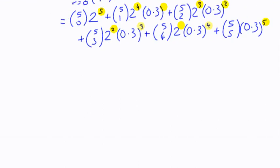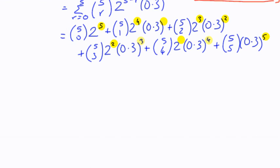First term, 5 choose 0 is 1, 2 to the power 5 is 32. Second term, 5 choose 1 is 5, and 2 to the power 4 is 16, and I've got 0.3.